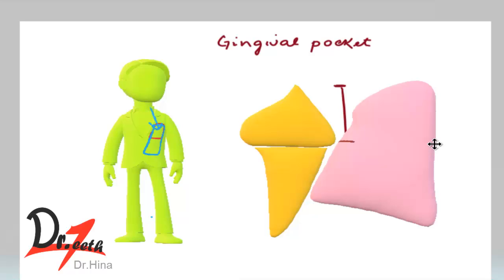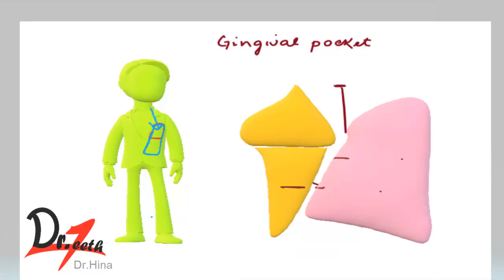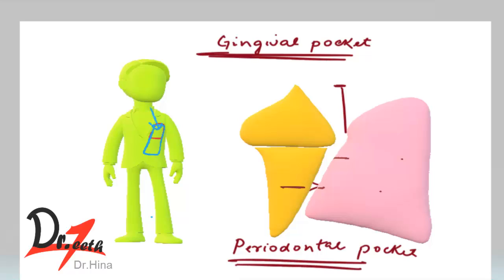The second type is when the gingival attachment moves apically. So the gingival attachment migrates apically, and this is where we find what is called the periodontal pocket. In the gingival pocket, there is no destruction of the underlying periodontal tissue — only the gingiva increases in bulk. But in the periodontal pocket, there is destruction of the supporting periodontal tissue.